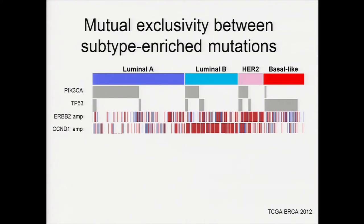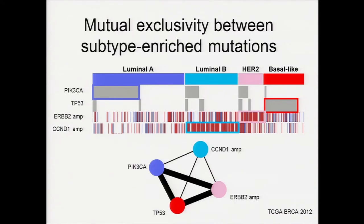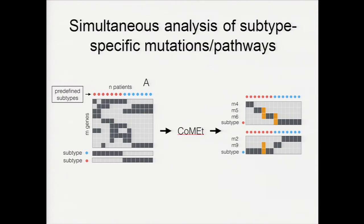When developing this algorithm, we also observed that mutual exclusivity is not only inside cancer pathways — we also found mutual exclusivity between subtypes in enriched mutation. For example, PIK3CA, TP53, and RB are highly mutated in different subtypes in breast cancer. Can we simultaneously identify subtype-specific mutations and pathways together? We create a mutation matrix by implanting predefined subtypes, adding a new row for each subtype containing all its mutations, such that we can identify this mutual exclusive pattern with subtype simultaneously.